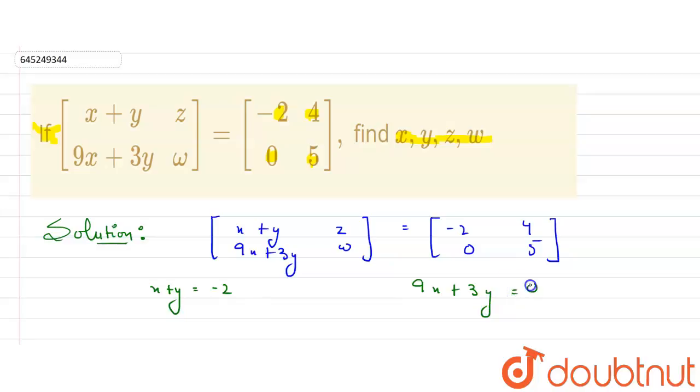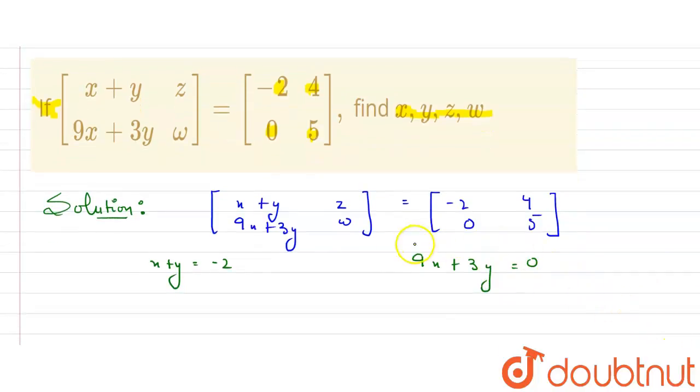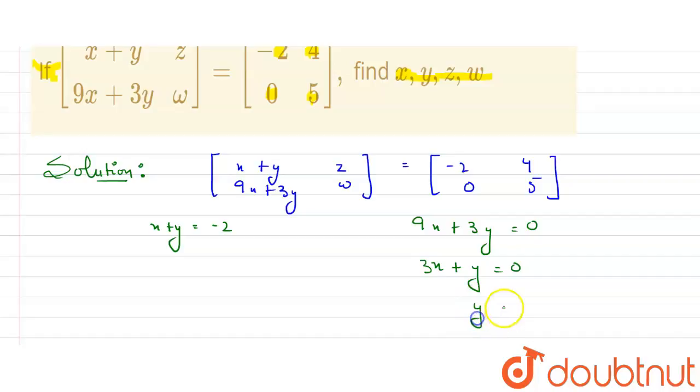And from here we can get the value of z and w also, but just first find the value of x and y. So it means that—sorry, three x here—3x plus y will be equals to zero. And from here I can get the value of y, that is equals to minus 3x.